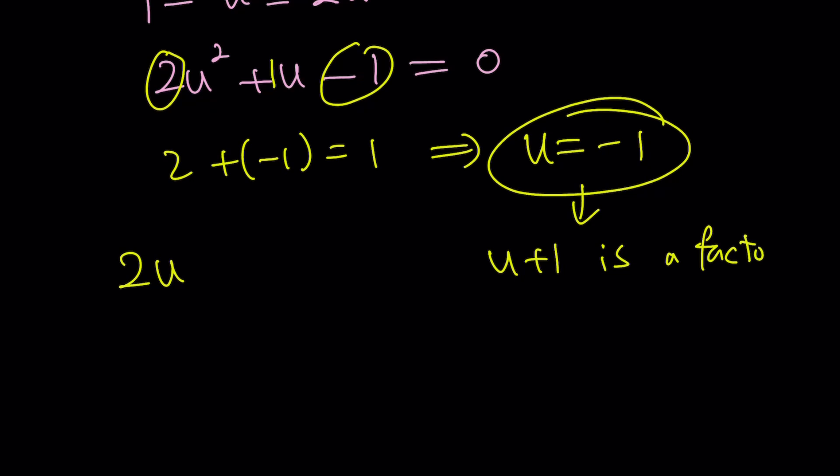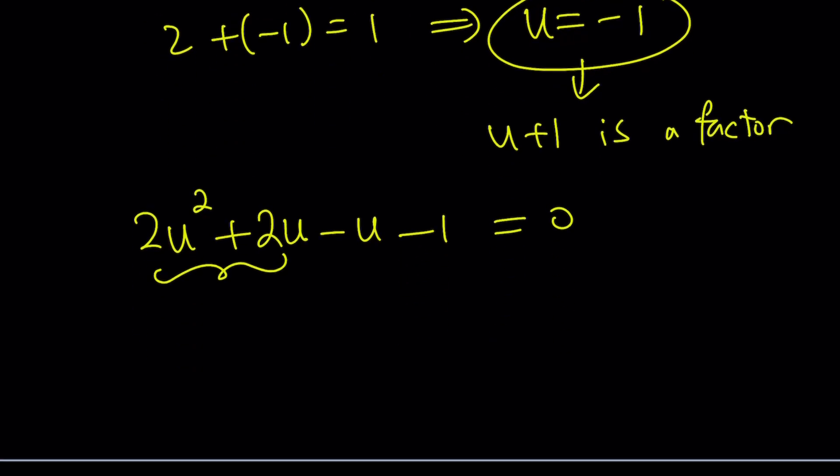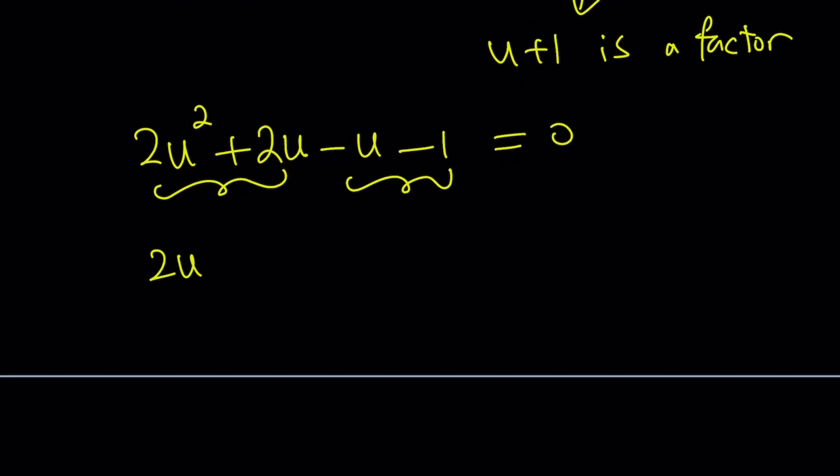Since this is a solution, factor theorem tells us u + 1 must be a factor. And we're going to factor this accordingly. This implies u + 1 is a factor. Now how do we make u + 1 from this? You can use polynomial division or the quadratic formula, but here's what I'm going to do. To get u + 1, I'm going to split up the u as 2u minus u - 1 = 0. Now notice this contains u + 1 and this contains u + 1, factoring by grouping. 2u(u + 1) - 1(u + 1). This verifies that u + 1 is actually a factor.